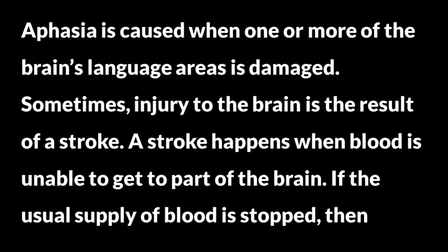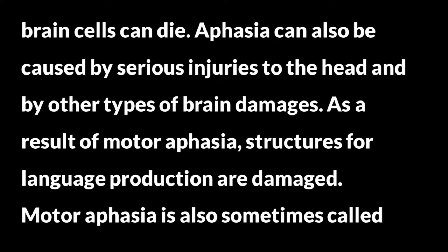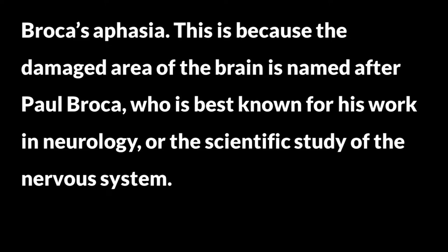Aphasia is caused when one or more of the brain's language areas is damaged. Sometimes injury to the brain is the result of a stroke. A stroke happens when blood is unable to get to part of the brain. If the usual supply of blood is stopped, then brain cells can die. Aphasia can also be caused by serious injuries to the head and by other types of brain damage. As a result of motor aphasia, structures for language production are damaged. Motor aphasia is also sometimes called Broca's aphasia. This is because the damaged area of the brain is named after Paul Broca, who is best known for his work in neurology, or the scientific study of the nervous system.